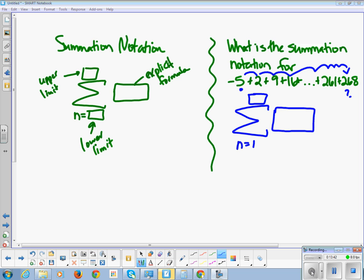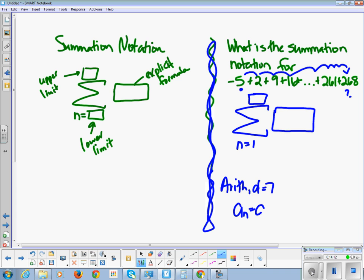Negative 5, plus 2, plus 9, plus 16, plus dot, dot, dot. That's our forever. Plus 261, plus 268. All right. Let's lay that down. First, I know I'm going to have this crazy sign here. Sigma. I know we are starting with the first term. Thank you very much. I have no idea in this sequence which term 268 is. So, we're going to have to calculate that. And we're going to have to calculate the explicit formula.